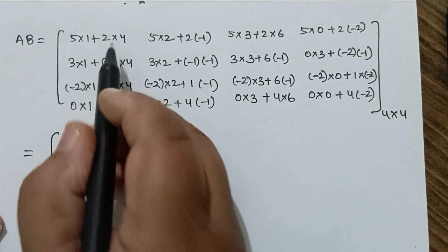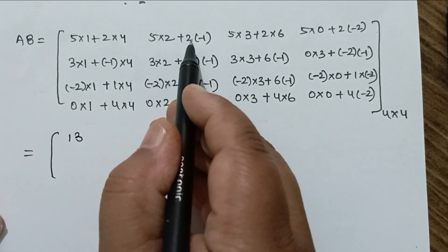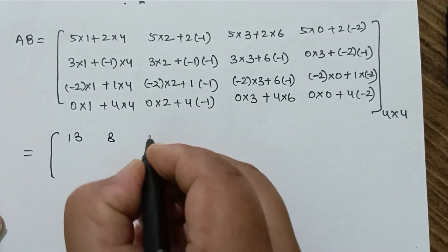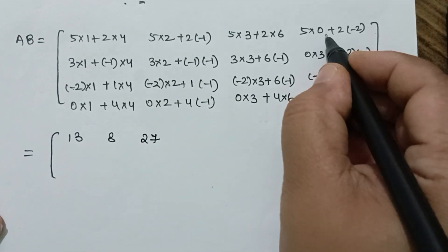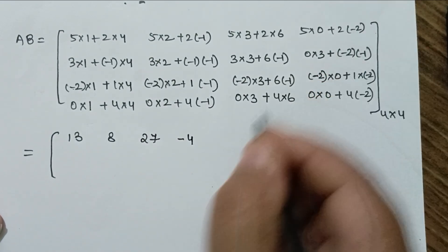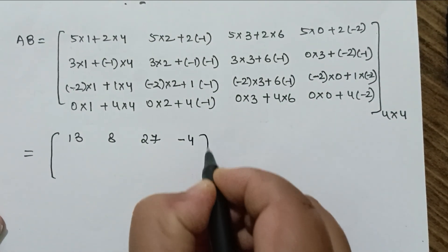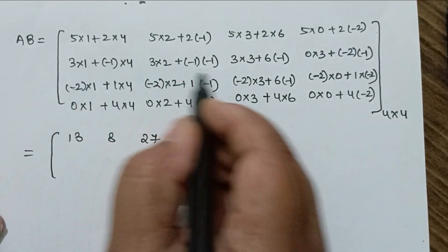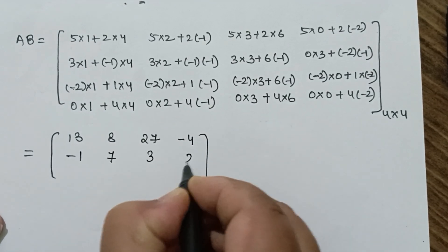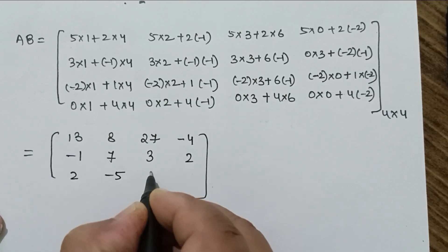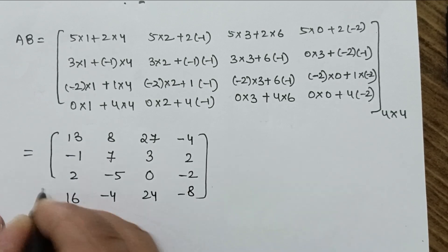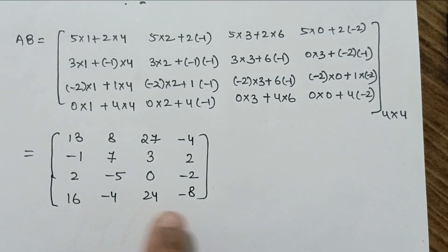Computing all values: first row gives 5+8=13, 10−2=8, 15+12=27, and 0−4=−4. The second row values are −1, 7, 3, 2. The third row values are 2, −5, 0, −2. The fourth row values are 16, −4, 24, and −8. So the final matrix AB is fully computed.